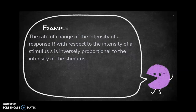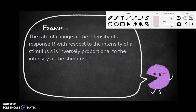Last example: 'The rate of change of the intensity of a response r with respect to the intensity of a stimulus s is inversely proportional to the intensity of the stimulus.' So the differential equation is dr/ds equals a constant divided by s, the intensity of the stimulus.